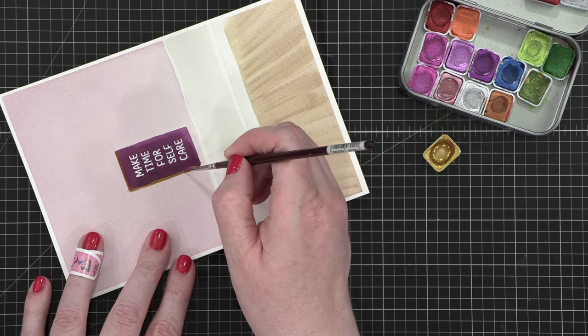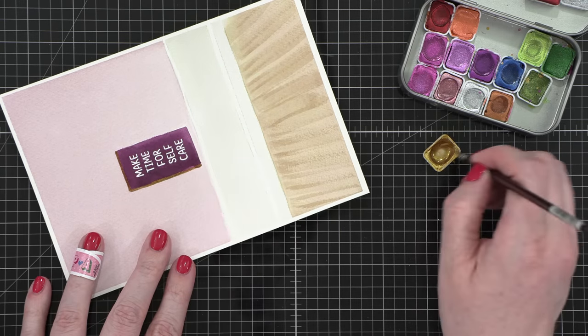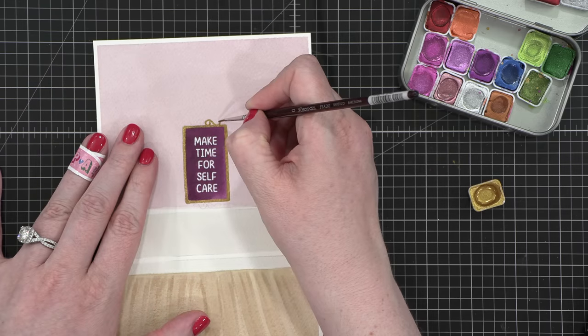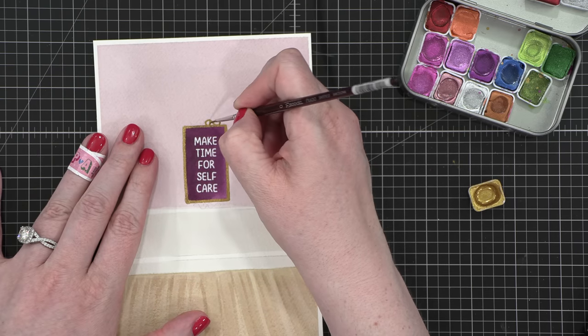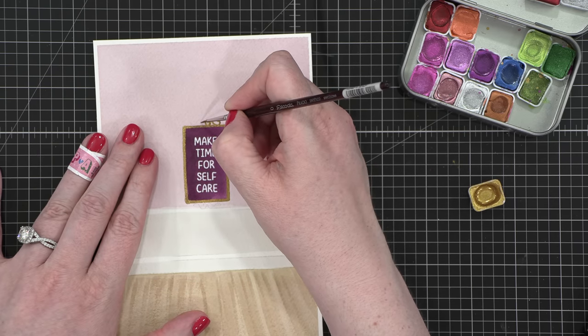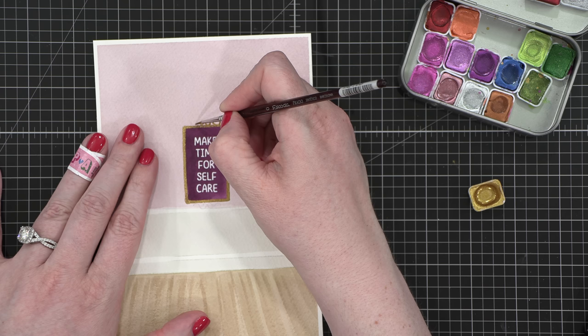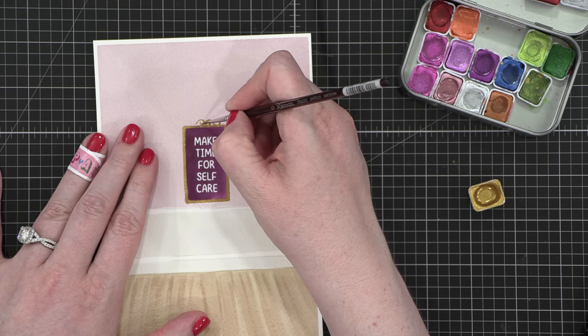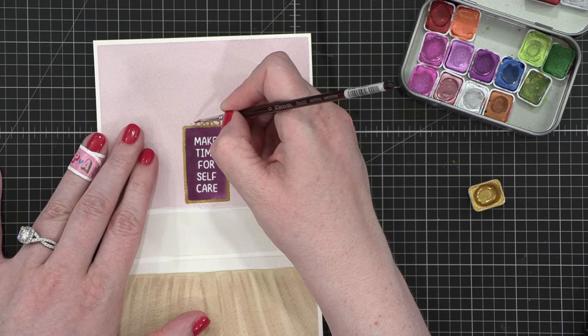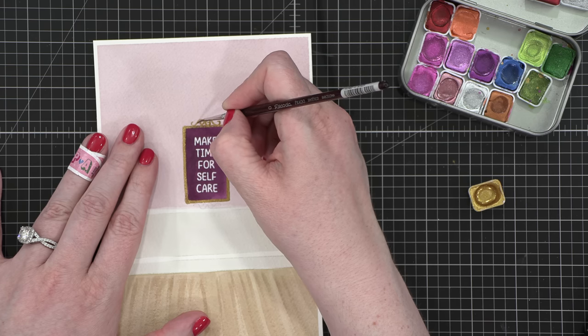I decided to make the frame a gold color and it would mimic the same gold that I use on the feet of the bathtub. So I'm using this gold shade from Yuli Watercolors. And I decided to do a little scroll pattern on the top and bottom of the frame.